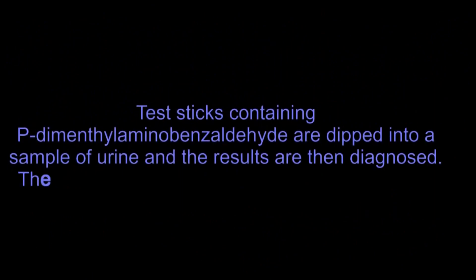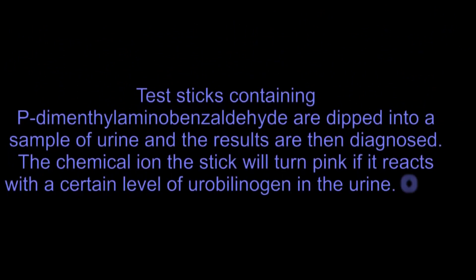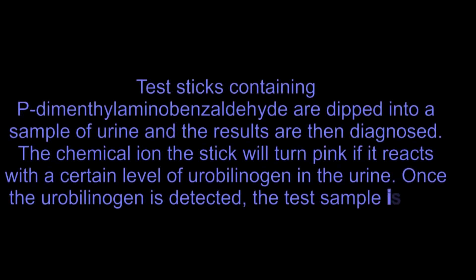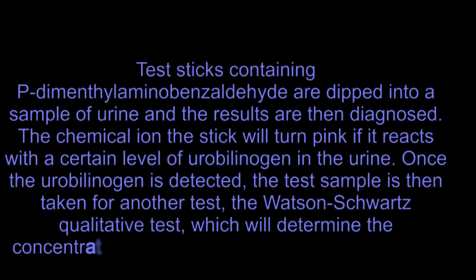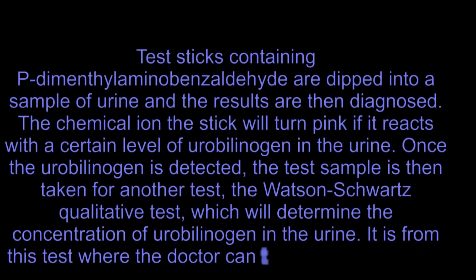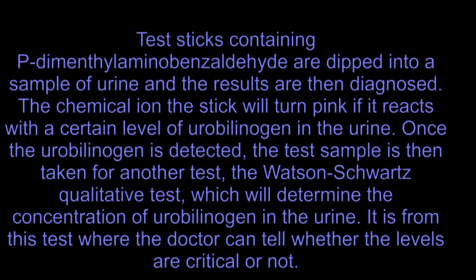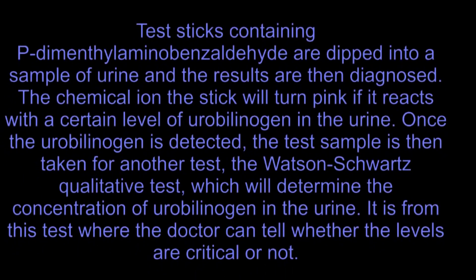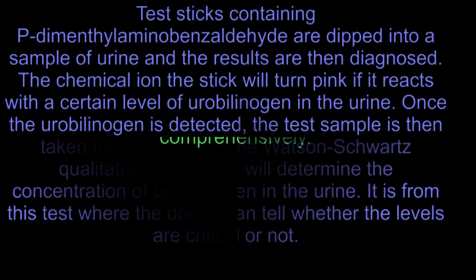Test sticks containing para-dimethyl amino benzaldehyde are dipped into a sample of urine and the results are then diagnosed. The chemical on the stick will turn pink if it reacts with a certain level of urobilinogen in the urine. Once the urobilinogen is detected, the test sample is then taken for another test — the Watts and Schwartz qualitative test — which will determine the concentration of urobilinogen in the urine. It is from this test that the doctor can tell whether the levels are critical or not.